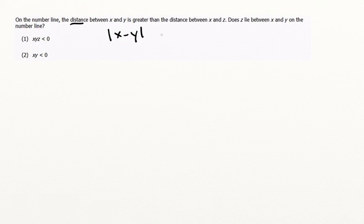Anything that's distance on the number line will always be absolute value, is greater than the distance between x and z. So that's absolute value of x minus z.